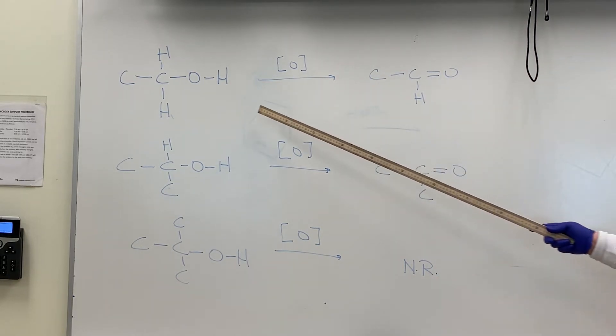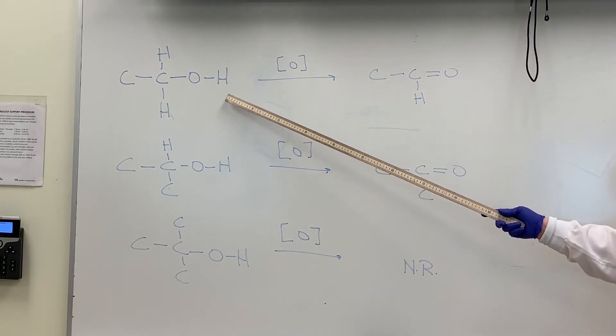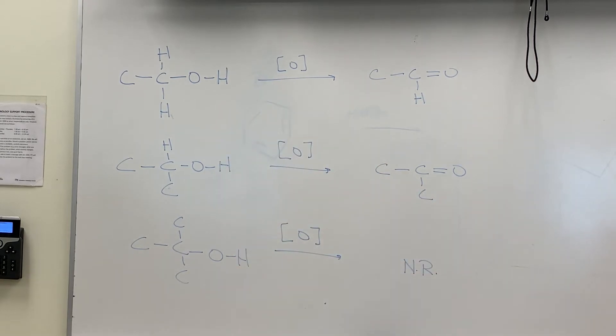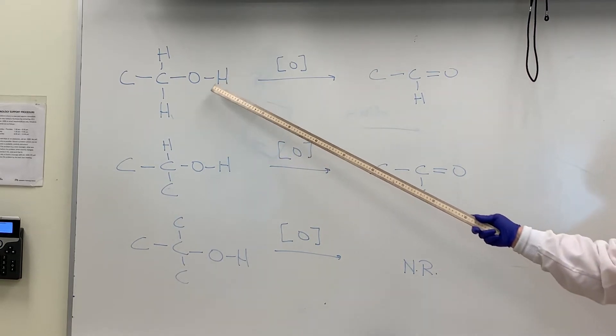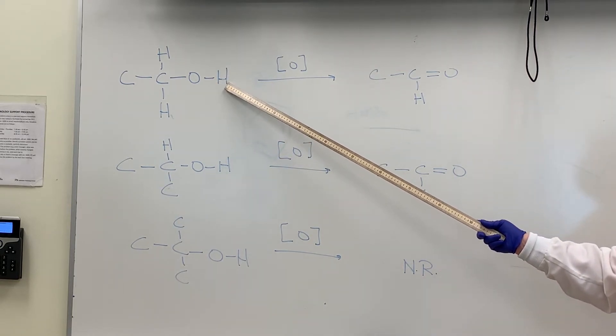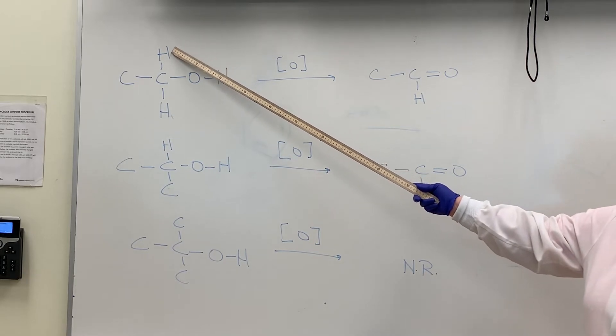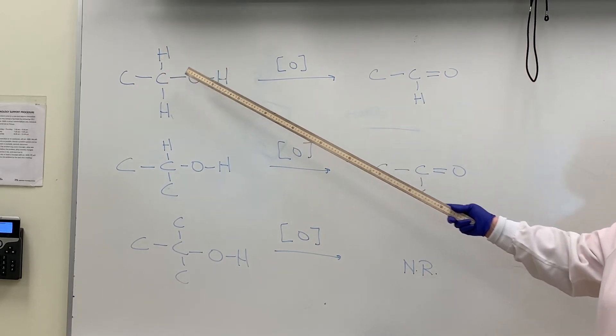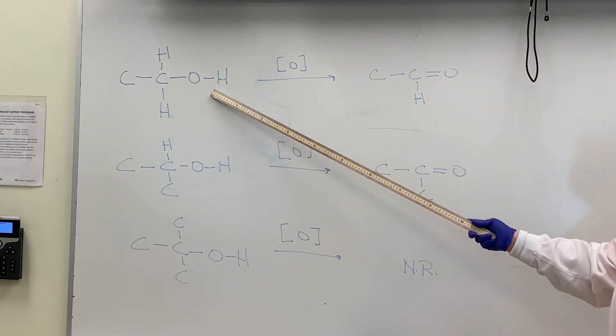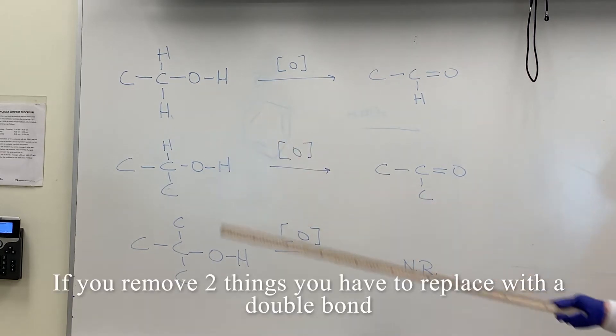If I have an alcohol, no matter if it's primary, secondary, or tertiary, the very first step in any oxidation is to remove two hydrogens. You're going to remove a hydrogen from the OH group and also remove a hydrogen from the carbon that is bonded to the OH group. So if you remove two things, you have to compensate by forming a double bond.